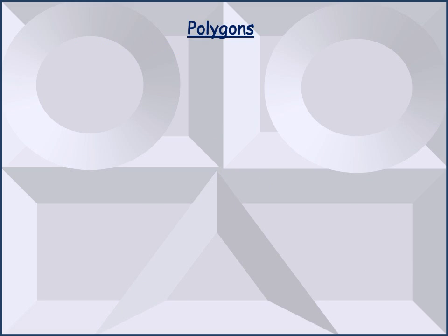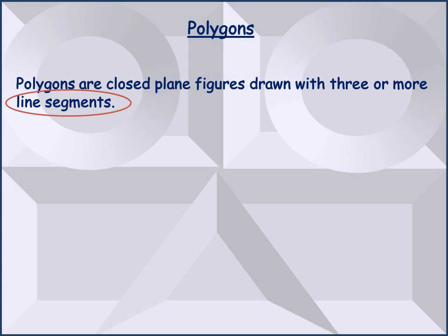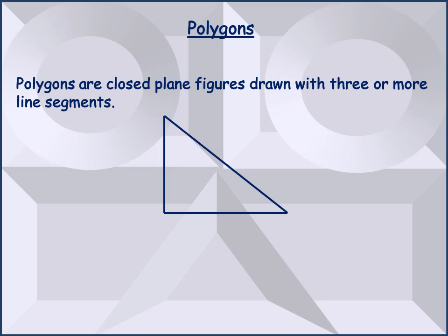Moving ahead with closed plane figures, we will now learn about polygons. Polygons are closed plane figures drawn with three or more line segments. Please note, polygons are drawn with line segments. This means in order to draw a polygon, you can use only straight lines and not curved lines. Let us start constructing a polygon with line segments. I draw the first line segment, joined to it I draw the second line segment. But did I get a closed plane figure? No. In order to get a closed plane figure, I need a third line segment which will join the open ends of the first two line segments to get a closed plane figure. Now, have you understood why we need at least three or more than three line segments in order to construct a polygon?